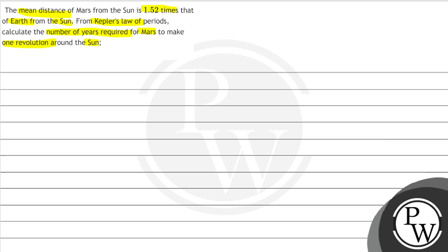So in this question we are asked that the mean distance of Mars from the sun, suppose this is Mars and this is sun, so the mean distance is 1.52 times from the Earth. So we have to tell how many years will Mars take to complete a revolution. In this question the key concept is Kepler's law of periods.